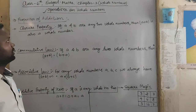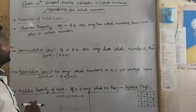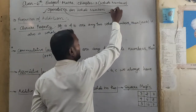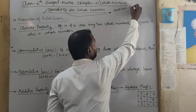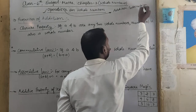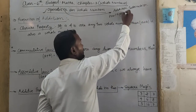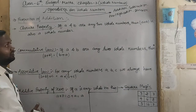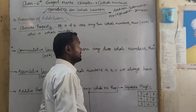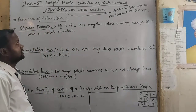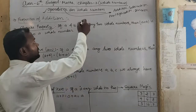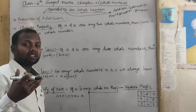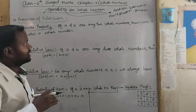The topic name is Operations on Whole Numbers. For operations on whole numbers, you will study addition, subtraction, multiplication, as well as division. In this operation, you will add, subtract, multiply, or divide whole numbers.